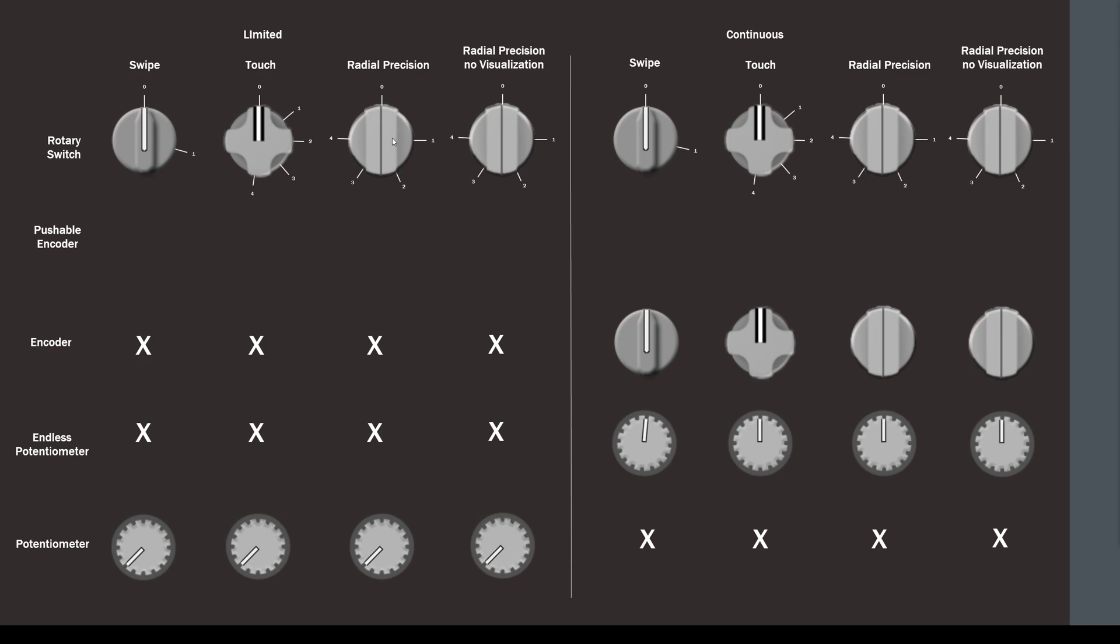The next interaction style that is new in 1.6 is radial precision mode, shown here with the optional visualization turned on. Radial precision mode works by putting your finger down or mouse down and then pulling a line out of the control. I'll show you the line here because visualizations are on. As you move the line around, it will rotate the control.